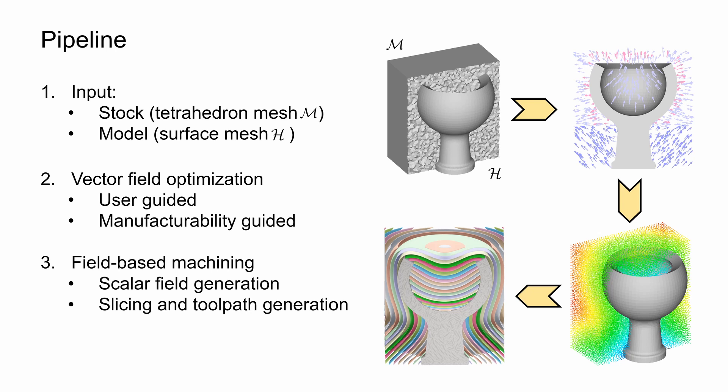The isoscalar sets of the scalar field serve as the roughing layers. When the gradient of the scalar field equals the vector field, the vector field represents the normal direction of these layers at each point, hence allowing us to control the shape of the layers using the distribution of the vector directions.